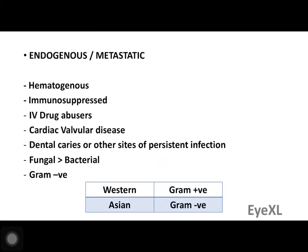Endogenous endophthalmitis, also called metastatic endophthalmitis, occurs when an infection elsewhere in the body metastasizes hematogenously to the eyeball — not related to any tumor. It commonly affects immunosuppressed patients, IV drug abusers, patients with cardiac valvular disease, dental caries, or other persistent systemic infections. In endogenous endophthalmitis, the most common class of organisms is fungal, in contrast to exogenous endophthalmitis where bacterial is more common.